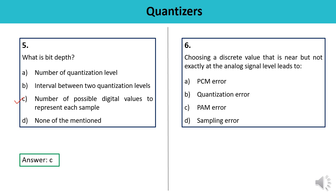Question 6: Choosing a discrete value that is near but not exactly at the analog signal level leads to which type of error — PCM error, quantization error, PAM error, or sampling error? One limitation of PCM is the quantization error, which occurs when we choose a discrete value at some nearby value but not exactly at the analog signal level. The answer is B.